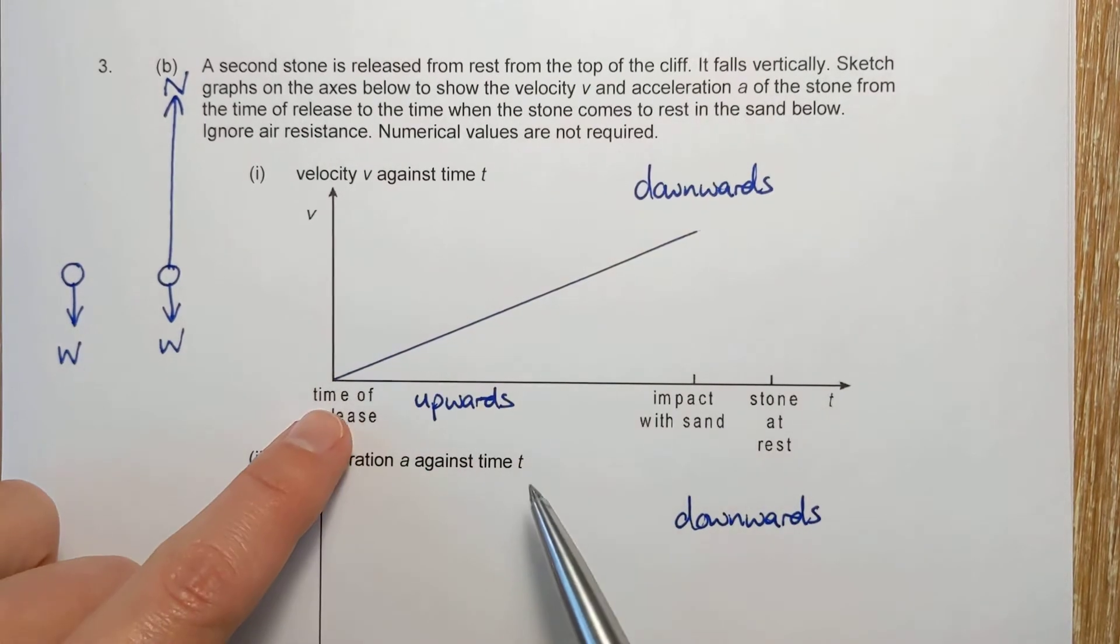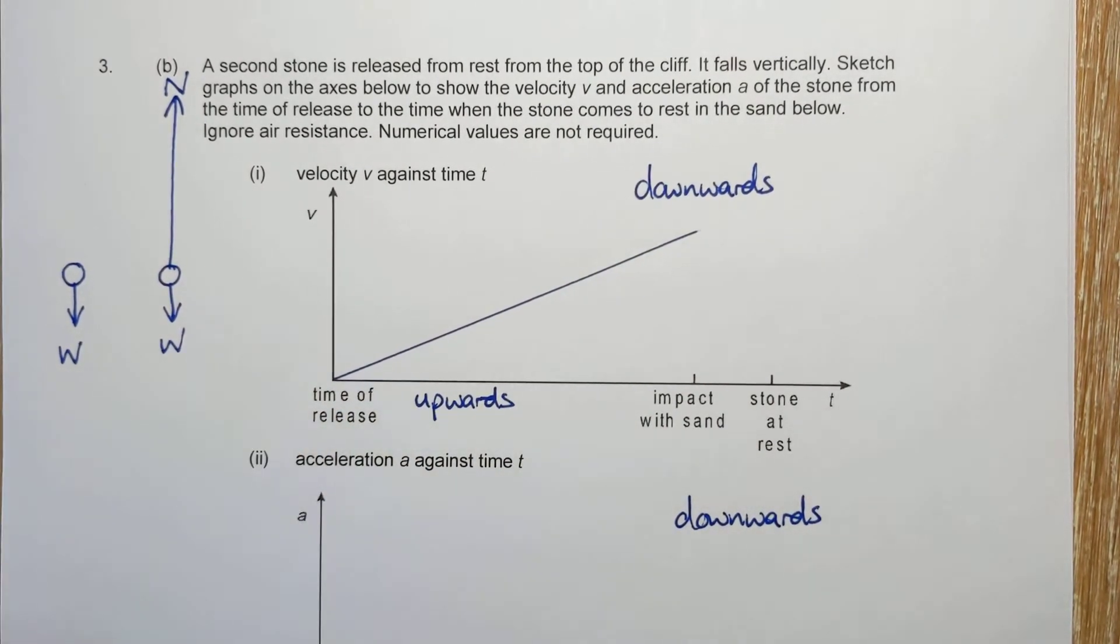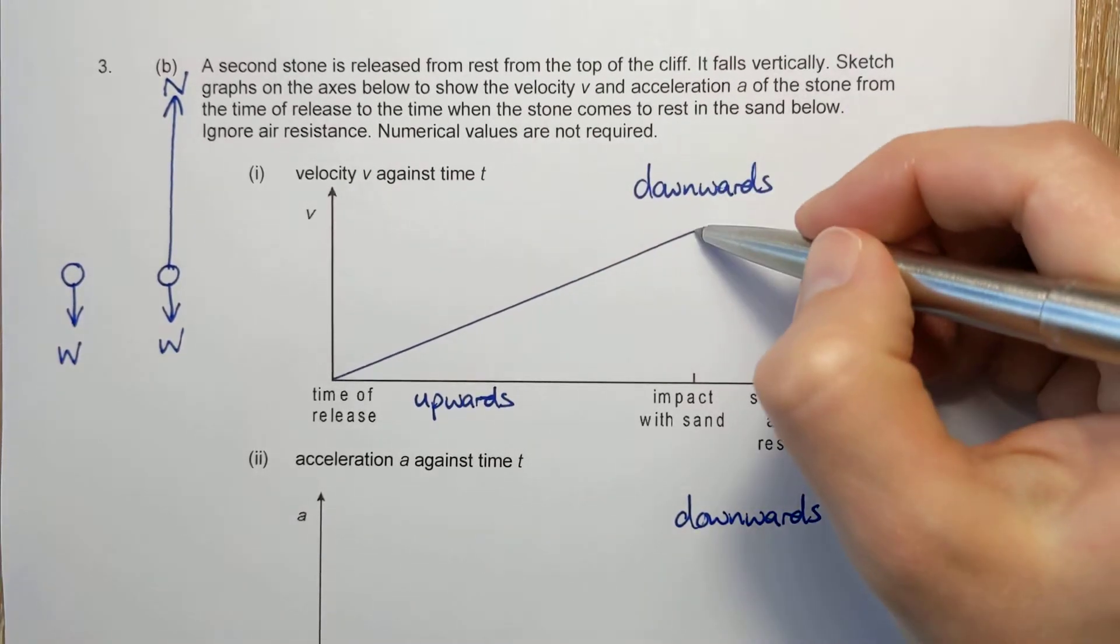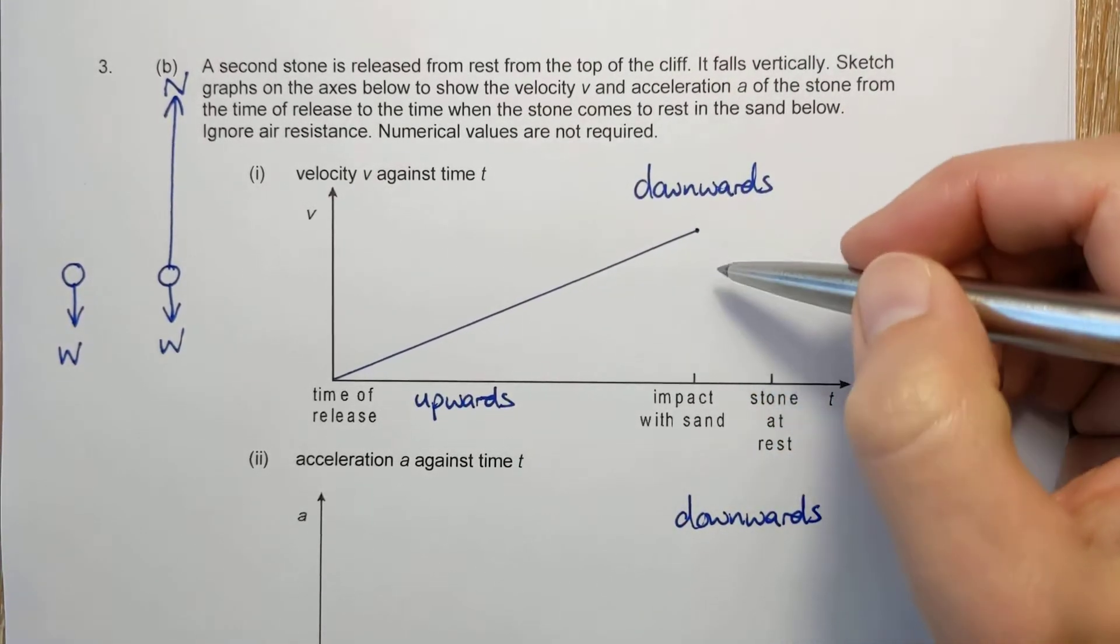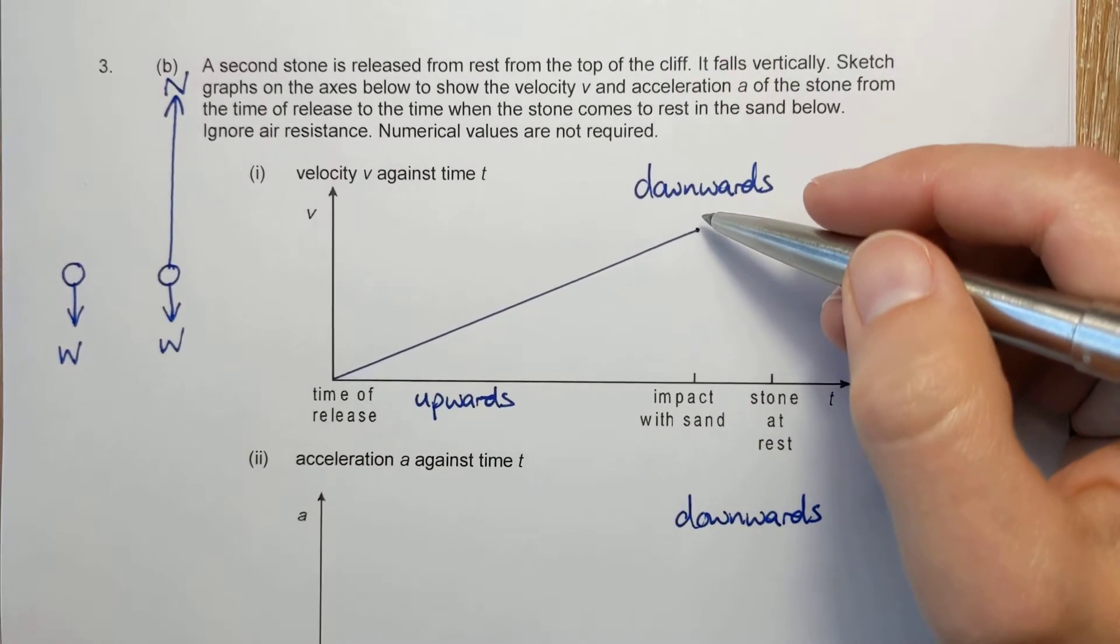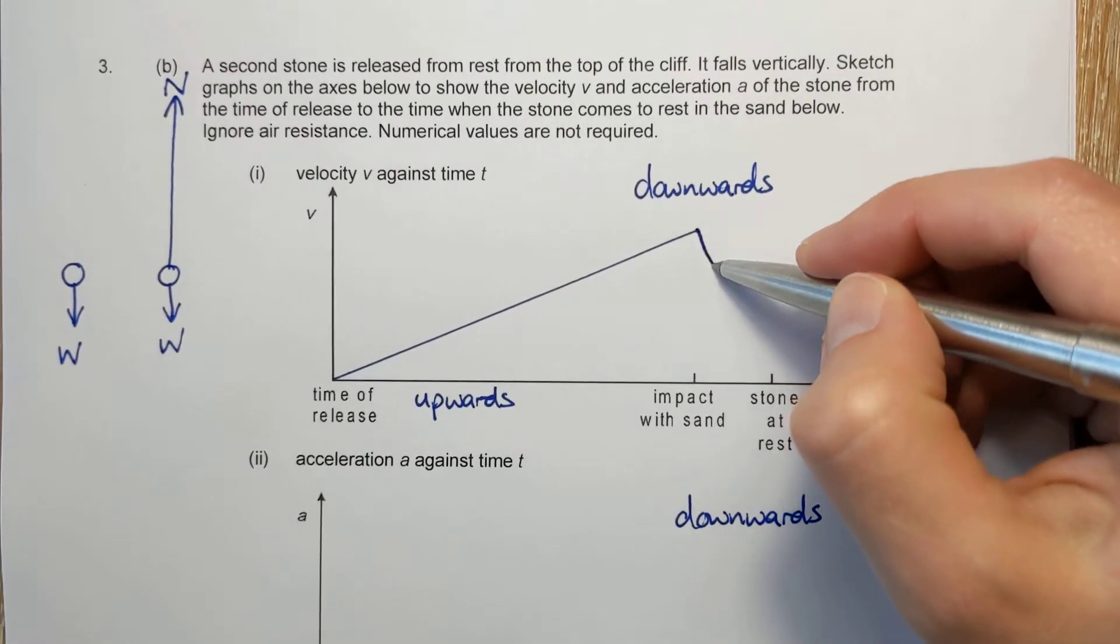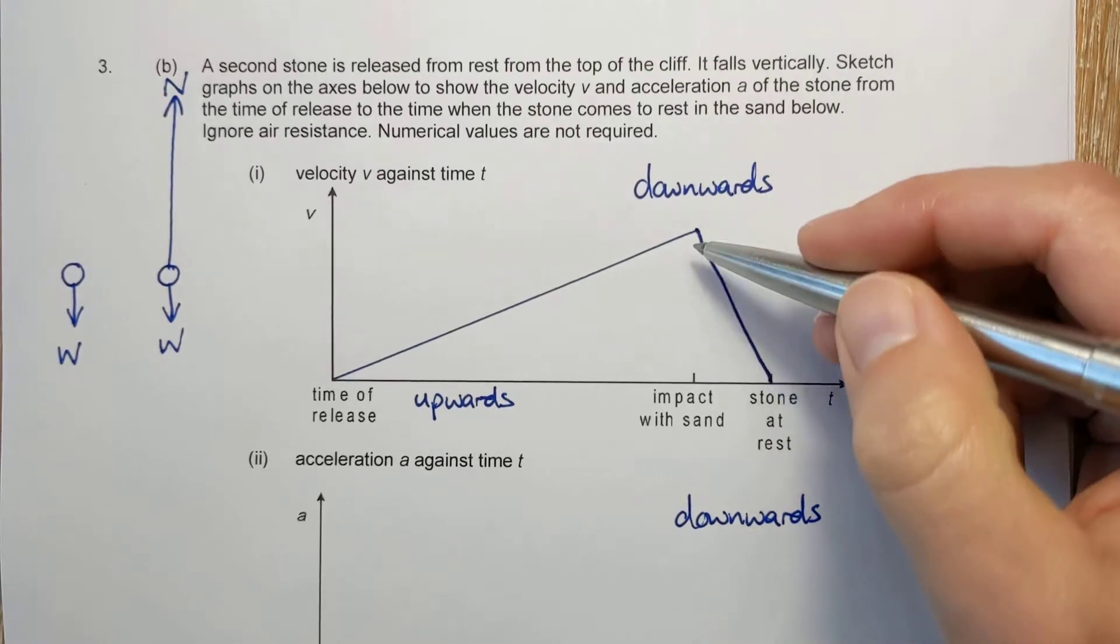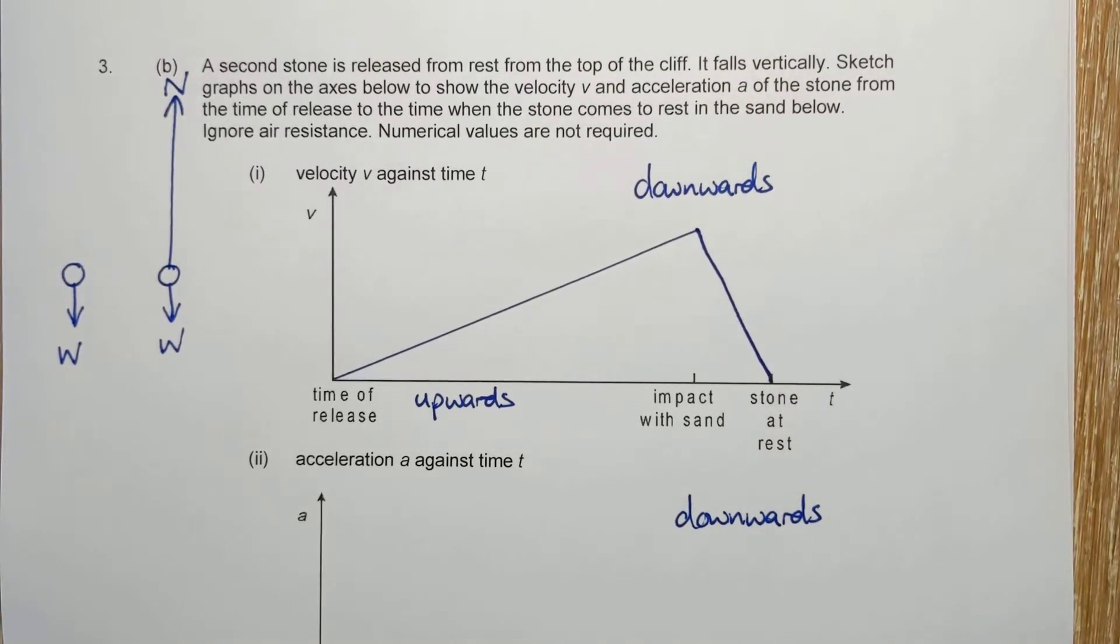Now, on our graph, upwards is negative. So we need negative gradient now. They don't care how you draw this in because you don't know if it's constant acceleration. You just know that it's upwards. So one way or another, you get the mark for drawing the velocity dropping back down to zero.